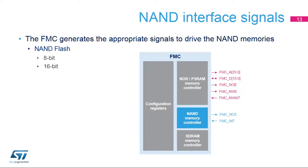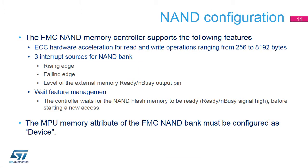The FMC generates the appropriate signals to drive NAND Flash memory. The address, data, and control signals are shared with the NOR PSRAM controller. The command latch enable (CLE) and address latch enable (ALE) signals of the NAND Flash memory device are driven by address signals from the FMC controller connected to address line 16 and address line 17, respectively. The ALE is active when writing to the address section, and the CLE is active when writing to the command section.